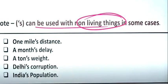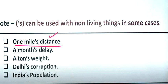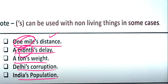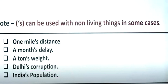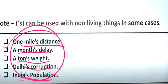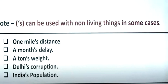Note that apostrophe-s can be used with non-living things in some cases, like one mile's distance, a month's delay, a ton's weight, Delhi's corruption, India's population. So this way, apostrophe-s is used in newspapers. In these cases with miles, distance, months, delay, weight, Delhi's corruption, India's population, non-living things can use apostrophe-s sometimes.